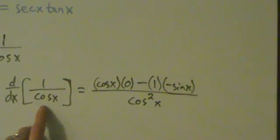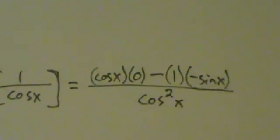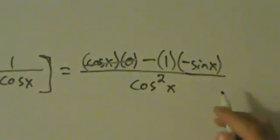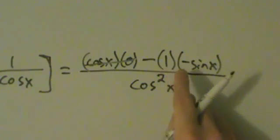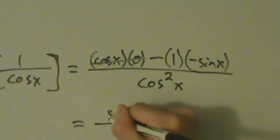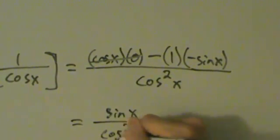And again, if you take cosine and you square it, that's just cosine squared of x. So here, when we simplify this, cosine x times 0, this term is just 0 here, so that's good. Then we have minus 1 times negative sine of x. So what we end up with is positive sine of x, all over cosine squared of x.